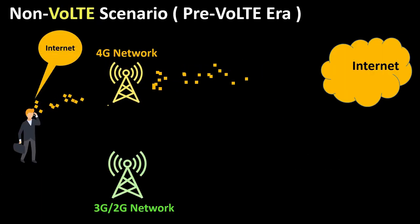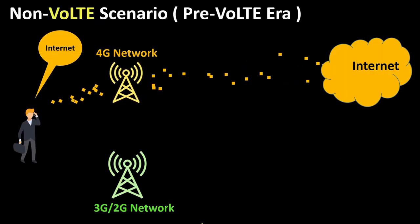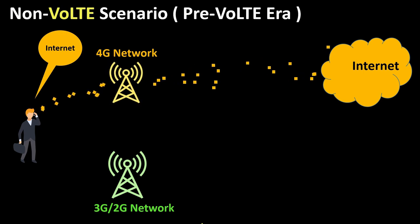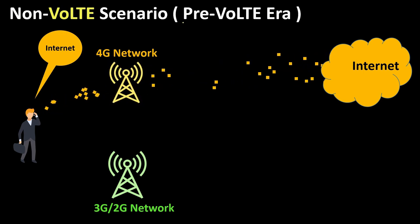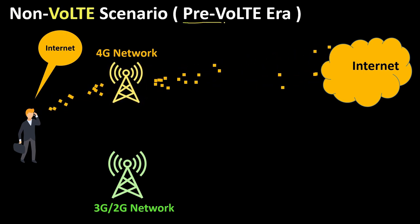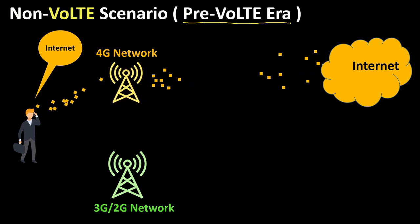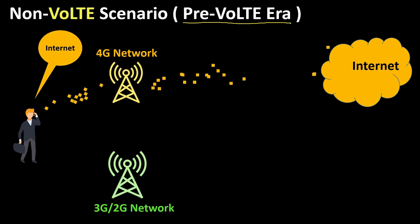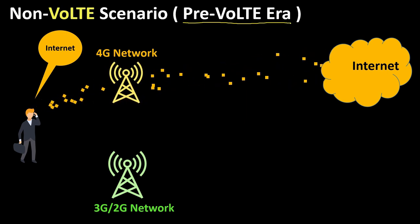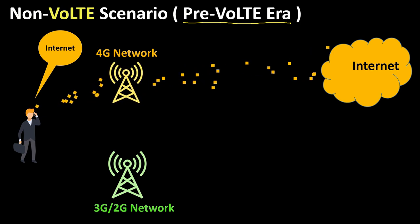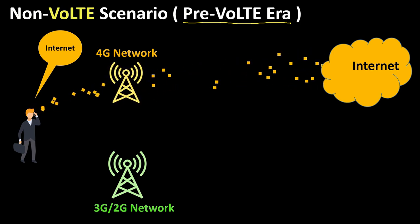For understanding of VoLTE, we need to go back into the history where VoLTE was not launched and there was only a 4G network along with 2G and 3G networks working on the ground. As we discussed, 4G came prior to VoLTE. 4G started getting commercial launches in 2009 while VoLTE came very late, around 2014.